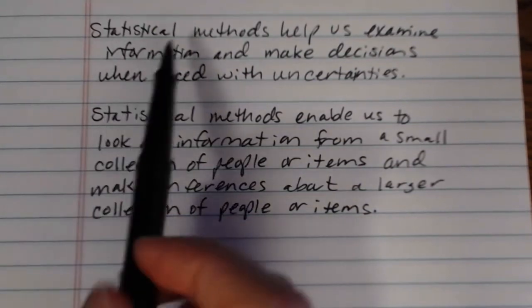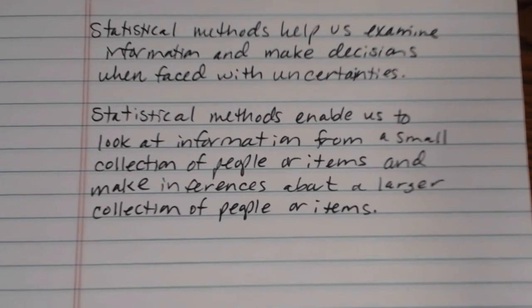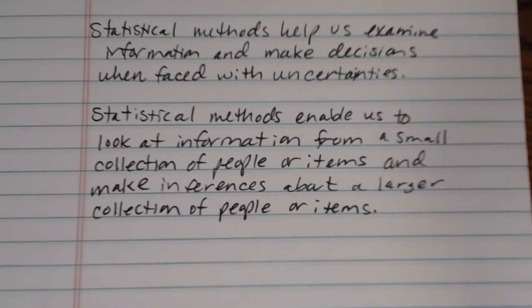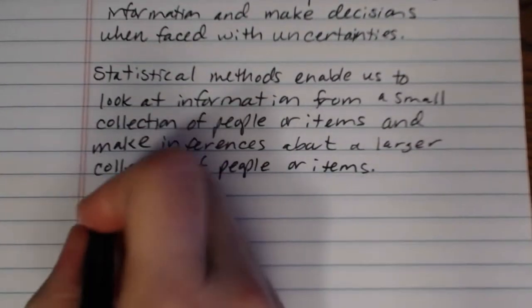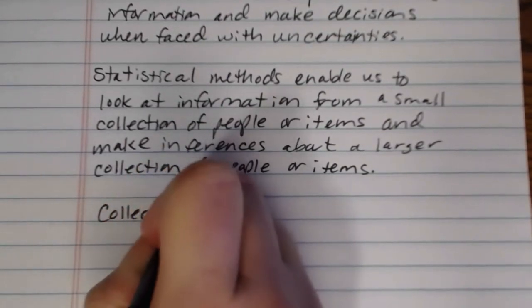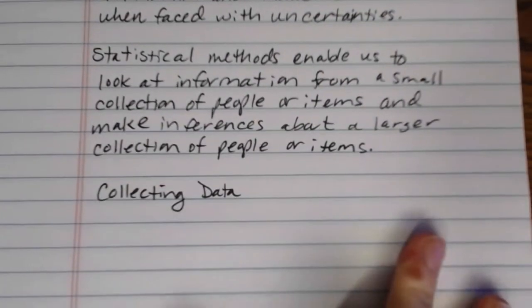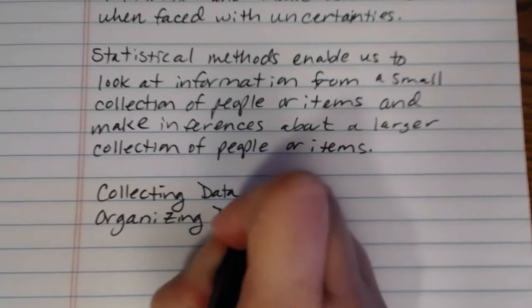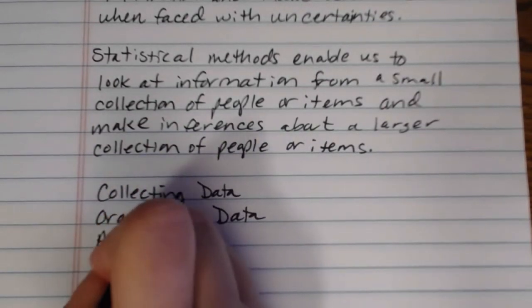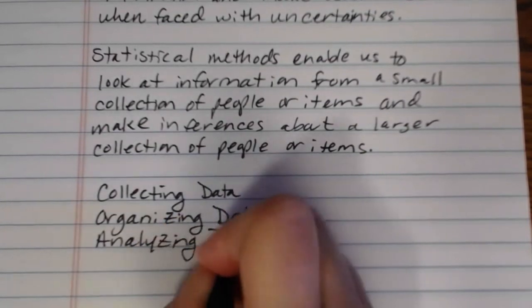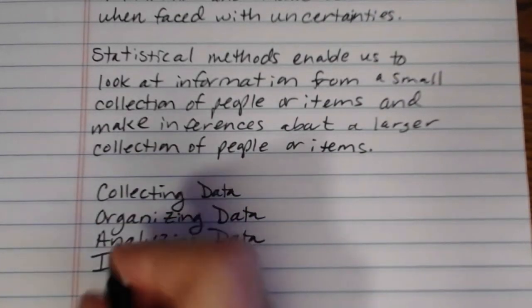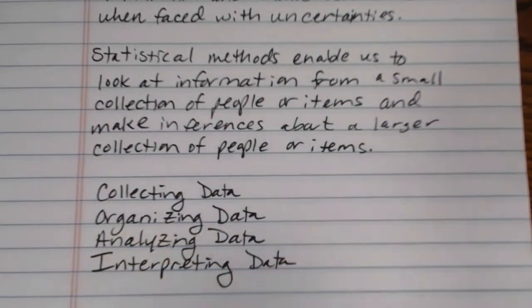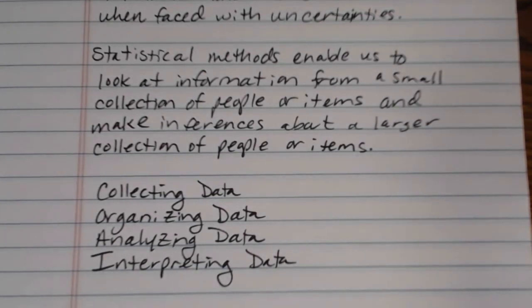We'll be looking at the different processes here basically throughout the rest of the quarter. Now the practice of statistics when you're doing either one of these things is generally speaking made up of four steps. And the four steps are collecting data, organizing data, analyzing data, and interpreting data. These are the four main things that we do when we engage in the process of statistics.